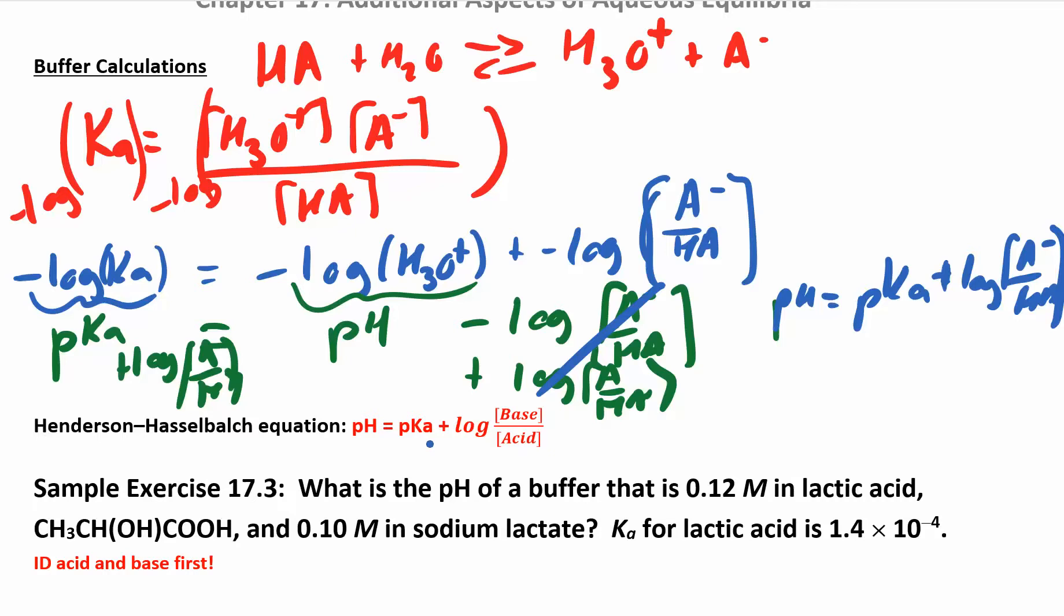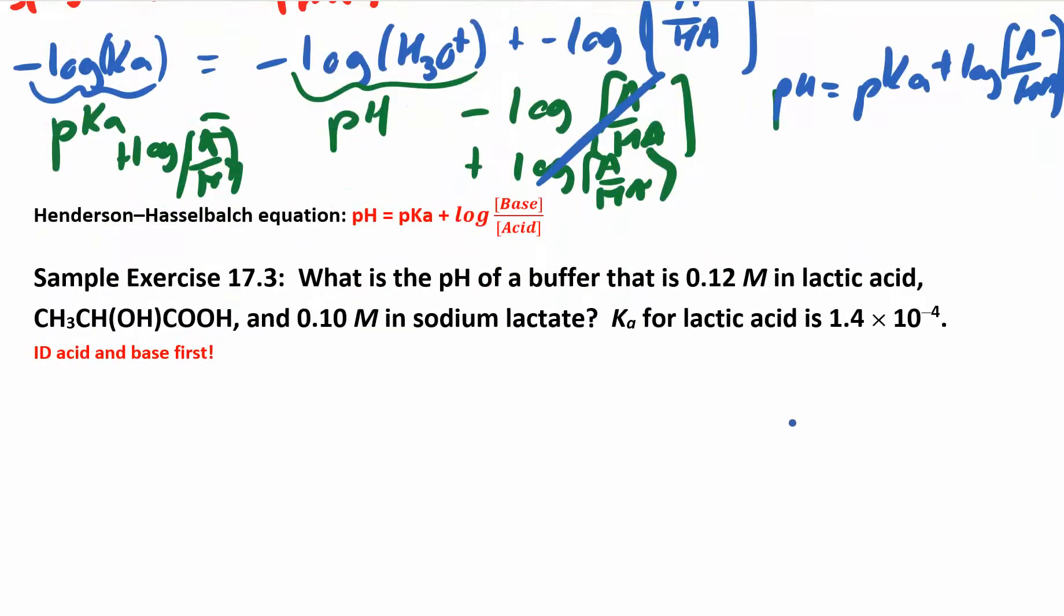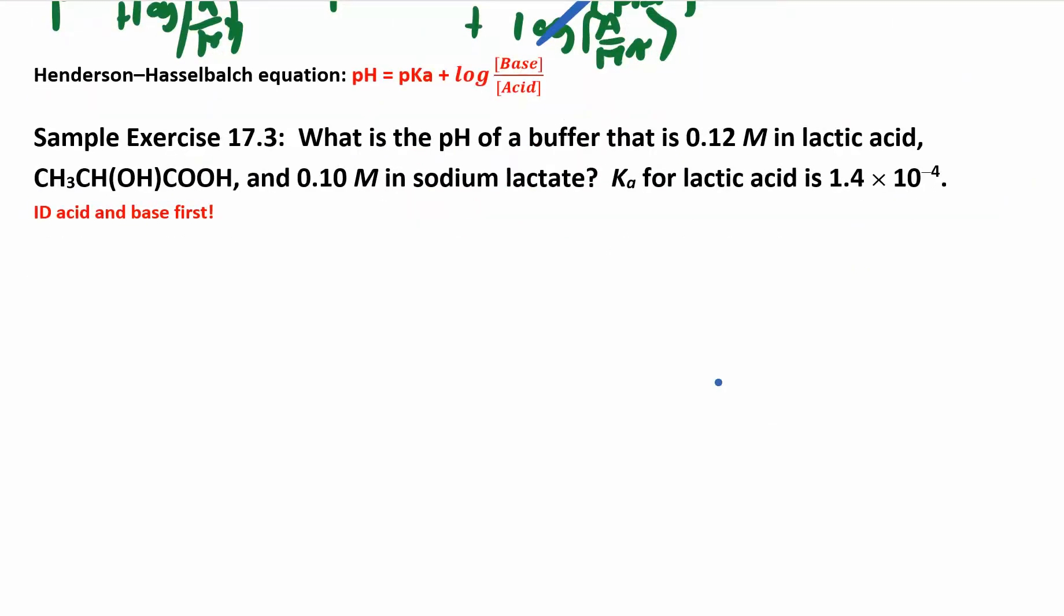So you can find the pKa even if they give you the Ka. Like in this next problem, they give you the Ka, so you do negative log of the Ka to get the pKa. These are just acid and base concentrations, and then you can solve for the pH. So let's try to use this Henderson-Hasselbalch equation down here in this problem.